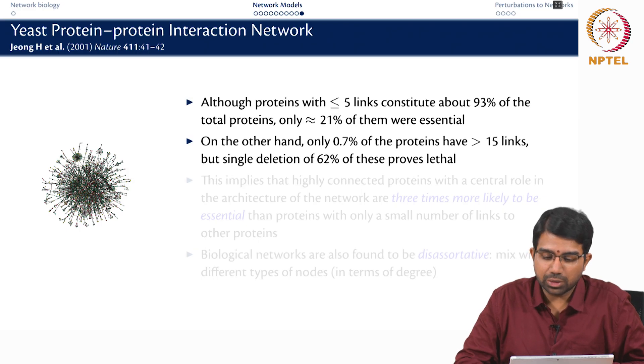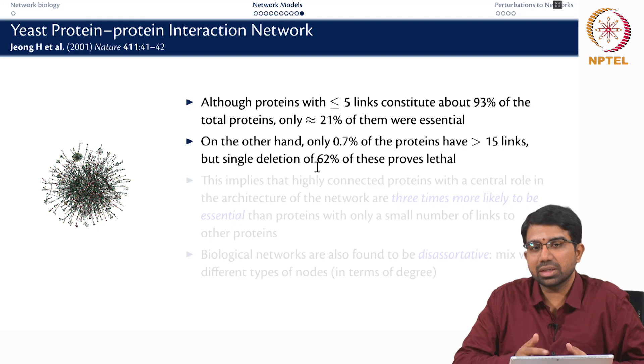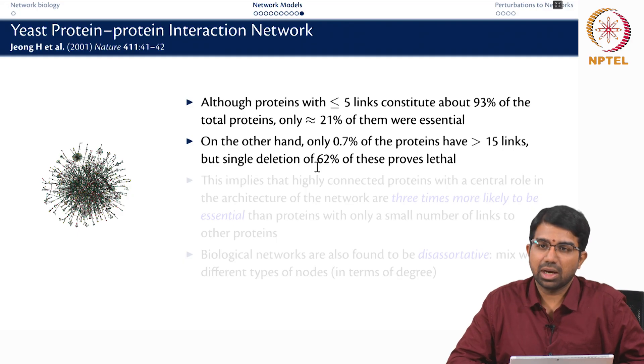On the other hand, there are very few proteins which have a large number of links, more than 15 or so, just 0.7%, but nearly 62% of these are lethal. So the red nodes are all red and these are all green. So what this tells you is that centrality is correlated with lethality and this is actually called the lethality-centrality hypothesis.